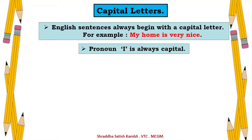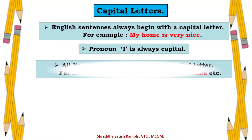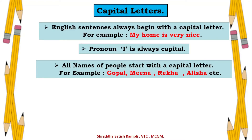The pronoun 'I' is always capital — wherever you write it as a pronoun, it is always capital. Instead of saying your name you say 'I will be coming', 'I would like to do this' — this 'I' will always be capital. All names of people start with a capital letter — these are proper nouns. For example: Gopal, Mina, Reka, Alisha — whenever you write a person's name you always start with a capital letter.